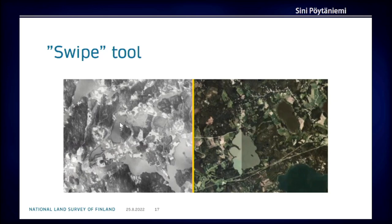Both the left-hand side and right-hand side of the swipe tool can be whatever image exists in the dataset.